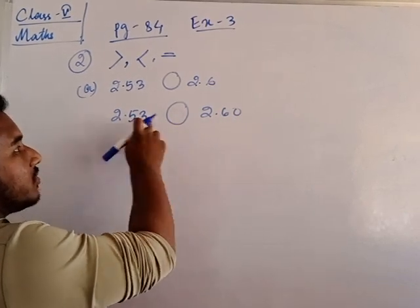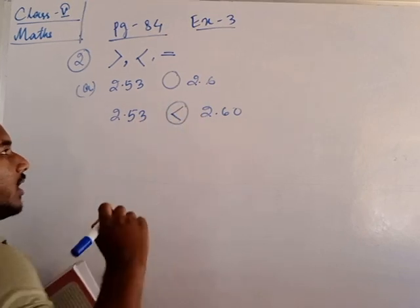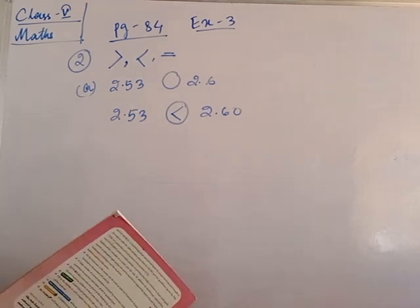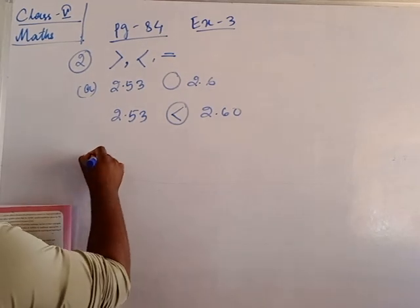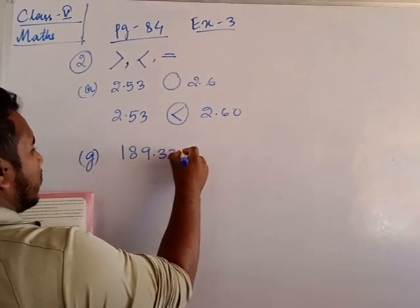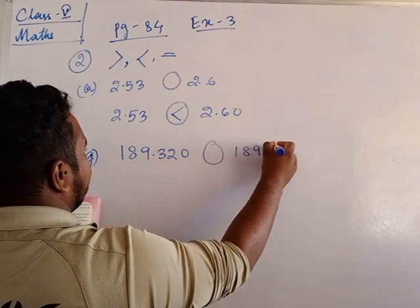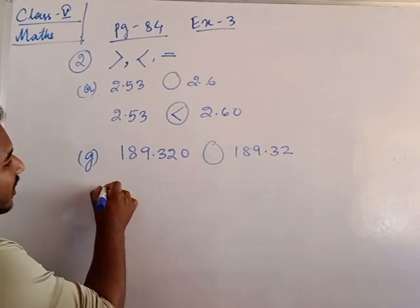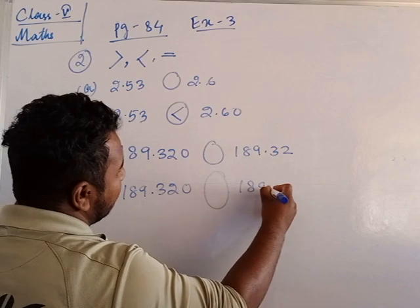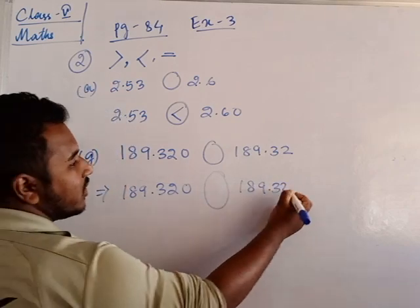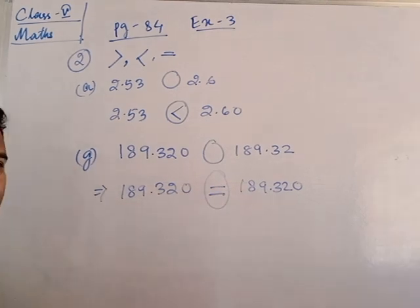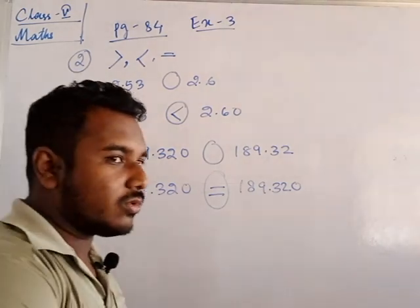So 2.60 is bigger — clear. One more: G number, 189.320 and 189.32. First write 189.320, then make three digits by putting one zero: 189.320 and 189.320. Now see, both are the same, so we put equal to. Like this you have to do.